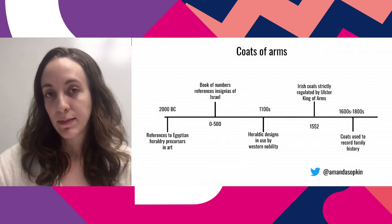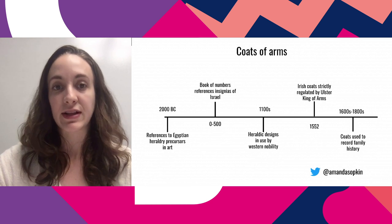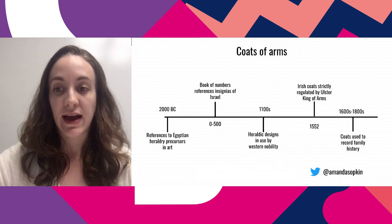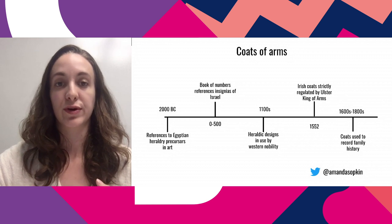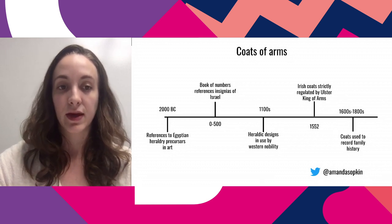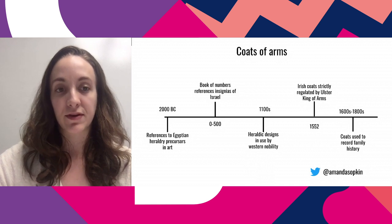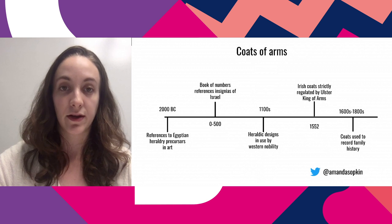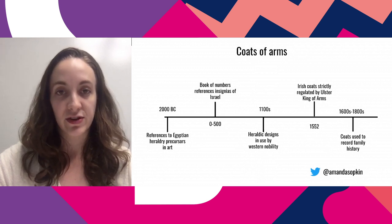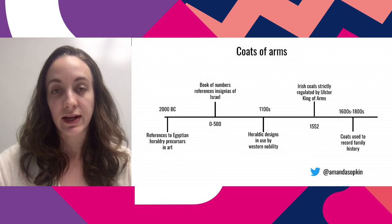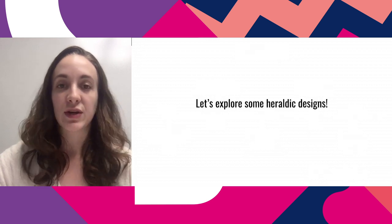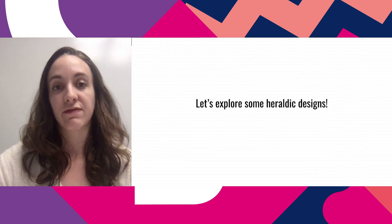Here's a basic timeline of key events surrounding this concept. The earliest reference to coats of arms is in 2000 BC in Egyptian hieroglyphics and artwork, showing rulers who wore particular emblems to signify where they came from. In the first century, the Bible's book of Numbers references insignias of the children of Israel. In the 12th century, heraldic designs were in use by Western nobility. By the 16th century they were strictly regulated in Ireland, and by the 17th through 19th centuries they were widely used to record family history.